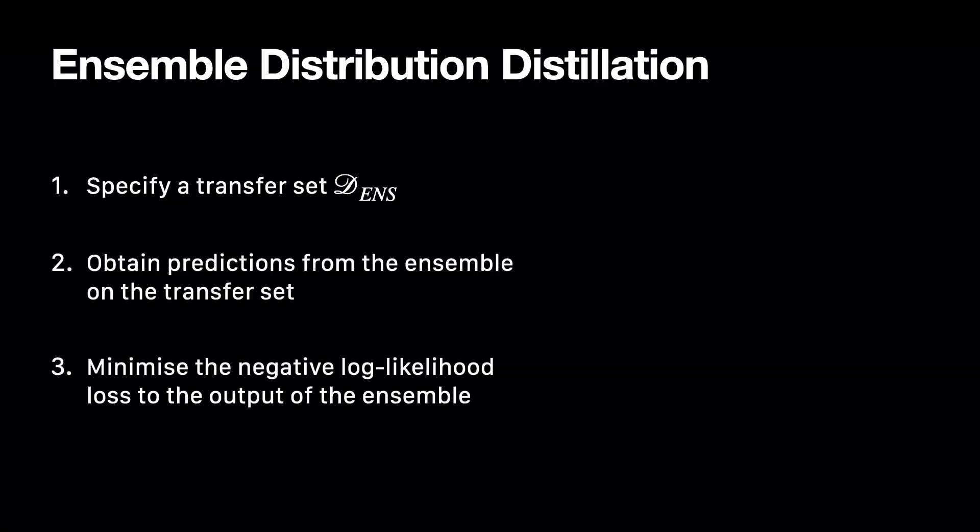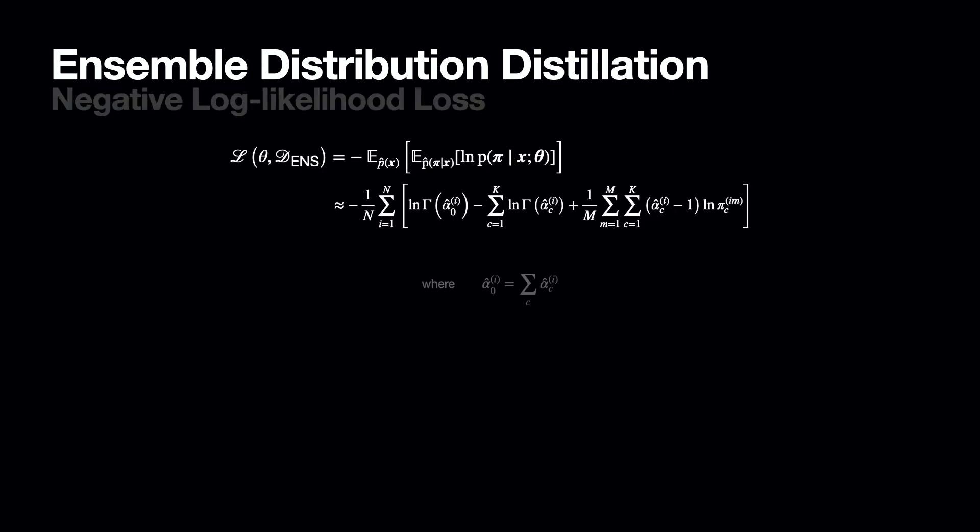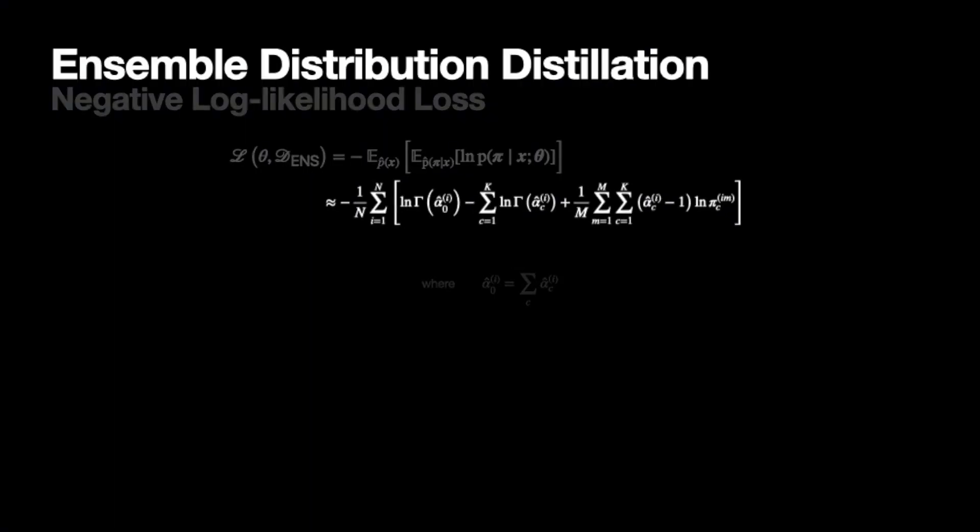Distilling an ensemble into a prior network is quite simple. Loosely speaking, we can distill the ensemble by trying to make the output of the prior network match the distribution of the predictions from the ensemble as closely as possible. The procedure consists of a few simple steps. Firstly, specify a transfer dataset — this can contain any data, including inputs from the original training dataset or extra unlabeled data. Secondly, obtain predictions from the ensemble on the transfer dataset; these will be the labels for the network being distilled into. Then train the prior network by minimizing the negative log likelihood — in other words, optimize the parameters of the prior network to maximize the probability of the ensemble predictions being drawn from the Dirichlet. The formula for the log likelihood of a Dirichlet distribution looks like this, and it would be implemented somewhat like this.